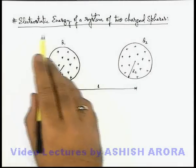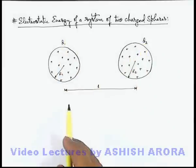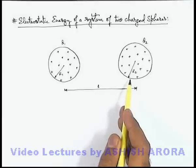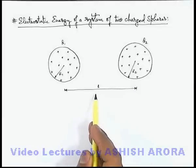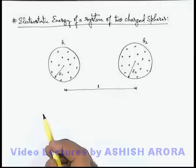Let's discuss the electrostatic energy of a system of two charged spheres. In this figure you can see there are two spheres having radii r1 and r2, separated by a distance l, and q1 and q2 charges are uniformly distributed in the two.